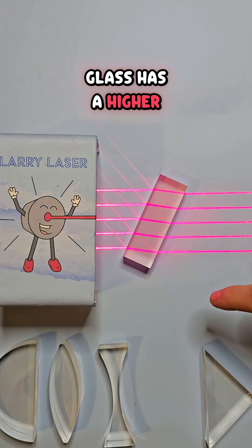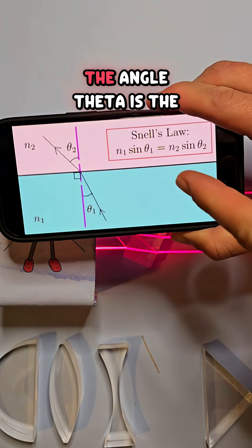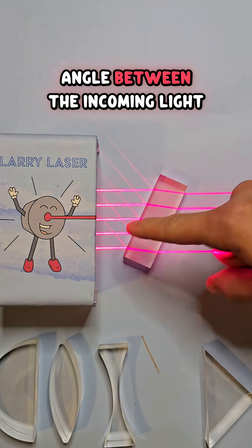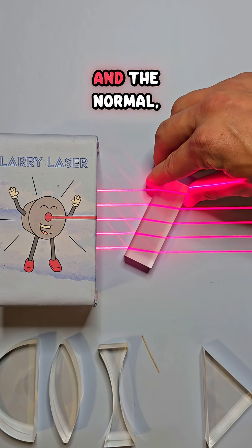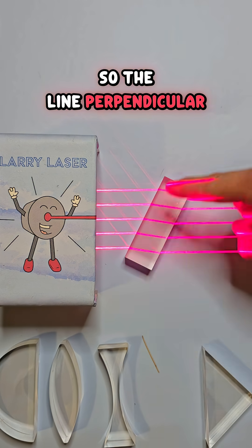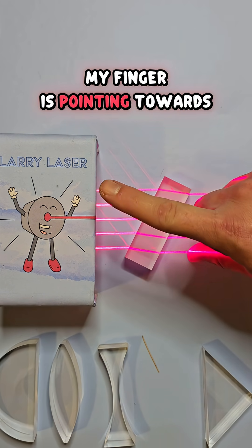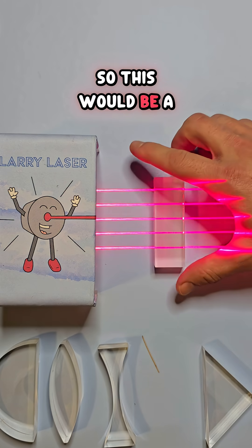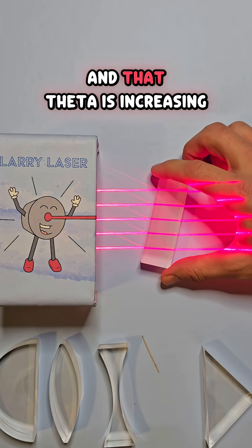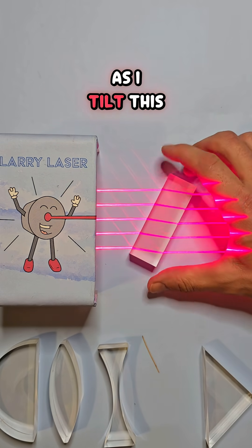Glass has a higher refractive index than air. The angle, theta, is the angle between the incoming light and the normal, so the line perpendicular to this glass surface. In this case, my finger is pointing towards the normal. So this would be a theta 1 of 0, and that theta is increasing as I tilt this.